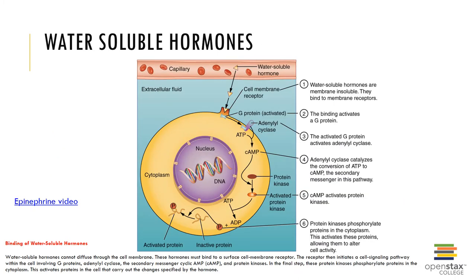An example of water-soluble hormone action: a water-soluble hormone binds to a membrane receptor, activating a G protein. The G protein activates adenyl cyclase, which catalyzes the conversion of ATP to cyclic AMP — the second messenger. Cyclic AMP activates protein kinases, and protein kinases phosphorylate proteins in the cytoplasm, activating them to then alter cell activity.